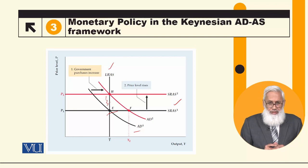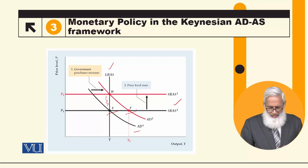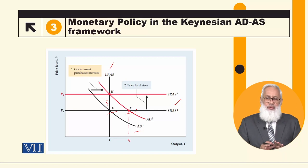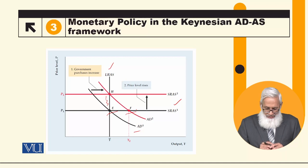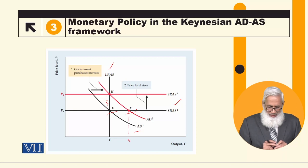So in the short run, the price is fixed at P1. The intersection point F will be on the upward-shifted short-run aggregate supply curve. Because in the short run there is price stickiness, SRAS1 and AD2 intersecting at F will be the short-run equilibrium point.